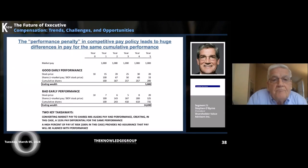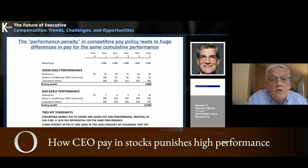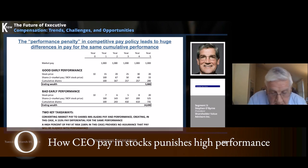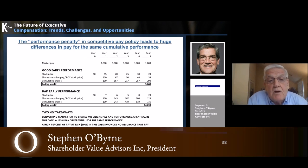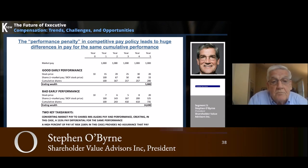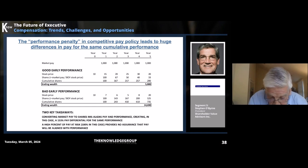I'd like to take you through two different performance scenarios. We're going to call one 'good early performance,' where the stock price starts at 10 and then rises up to 30 in year four before dropping back to 20 in year five. And then we're going to contrast that with 'bad early performance,' where the stock price also starts at 10 but then declines to five in year three before rising back up to 20 in year five.